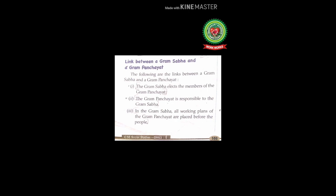The following are the links between a Gram Sabha and a Gram Panchayat. Number one: the Gram Sabha elects the members of the Gram Panchayat — meaning the members of the Gram Panchayat are the representatives of the Gram Sabha. Number two: the Gram Panchayat is responsible to the Gram Sabha — meaning the Gram Panchayat is answerable to the people of the village. Number three: in the Gram Sabha, all working plans of the Gram Panchayat are placed before the people — meaning the Gram Panchayat must present its plans before the Gram Sabha before implementing them.